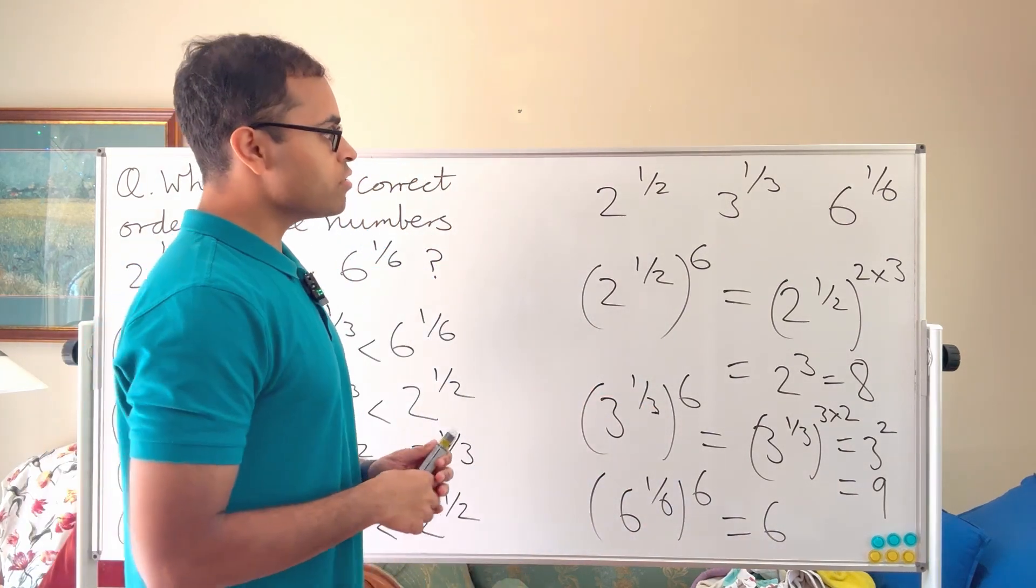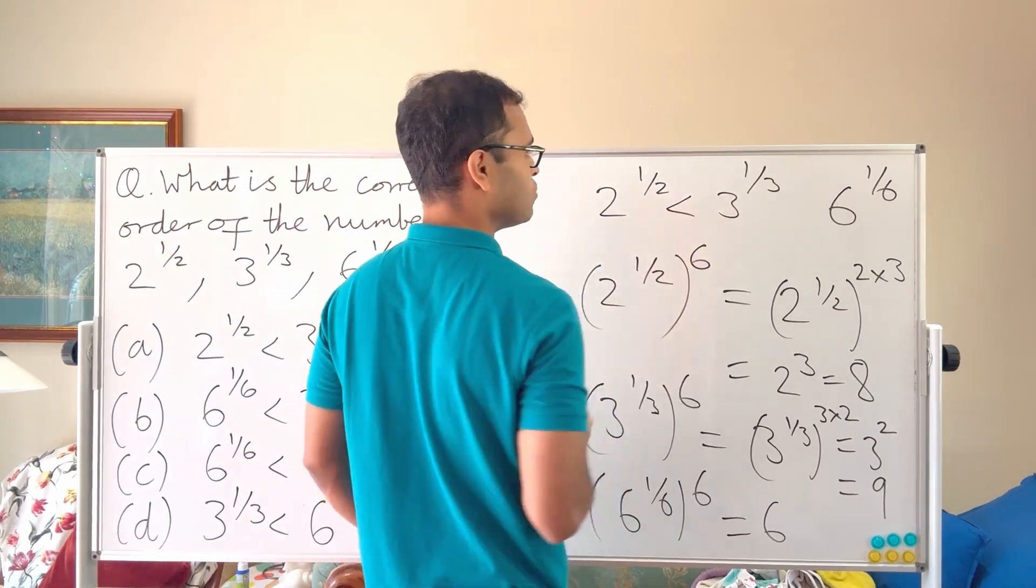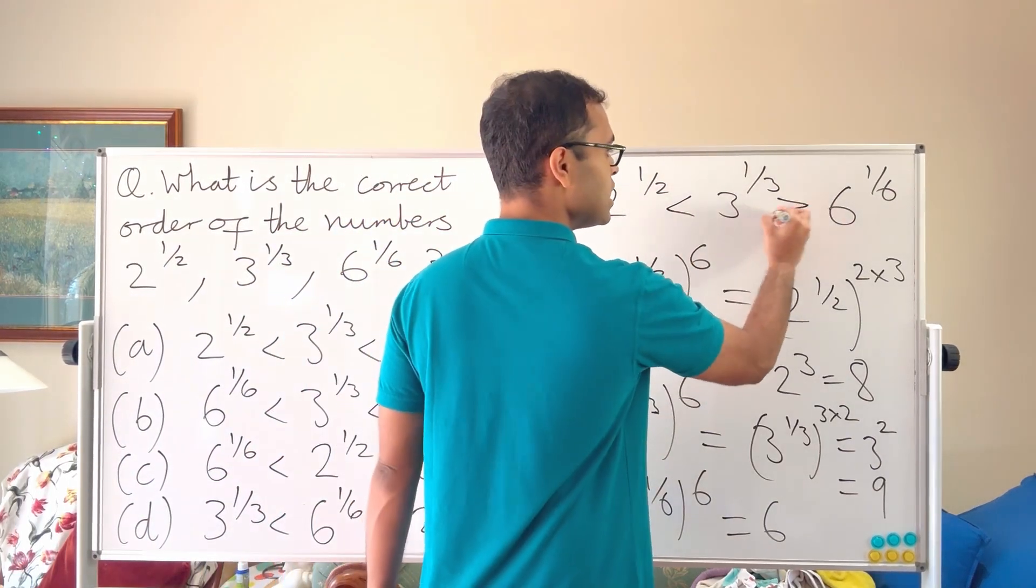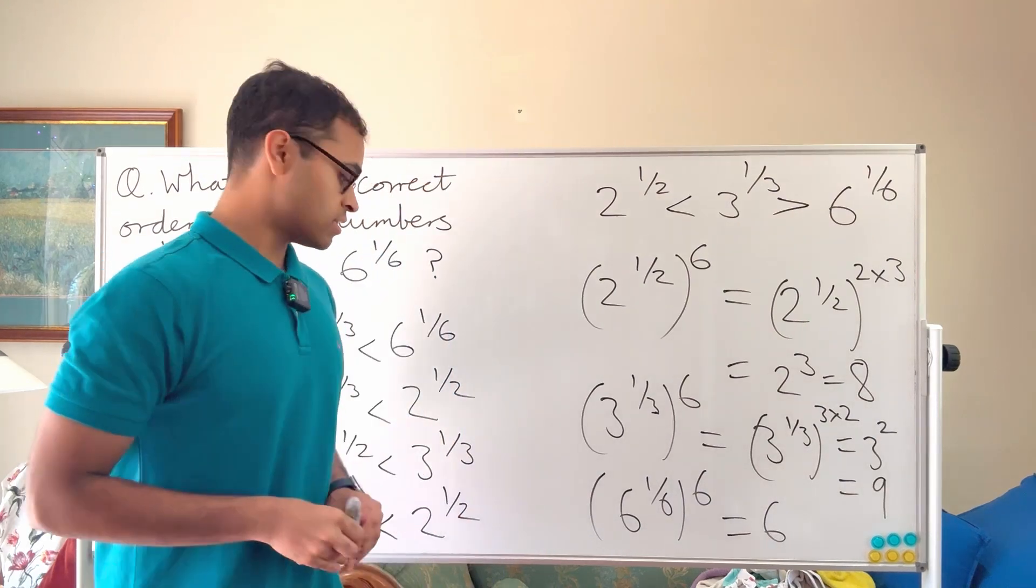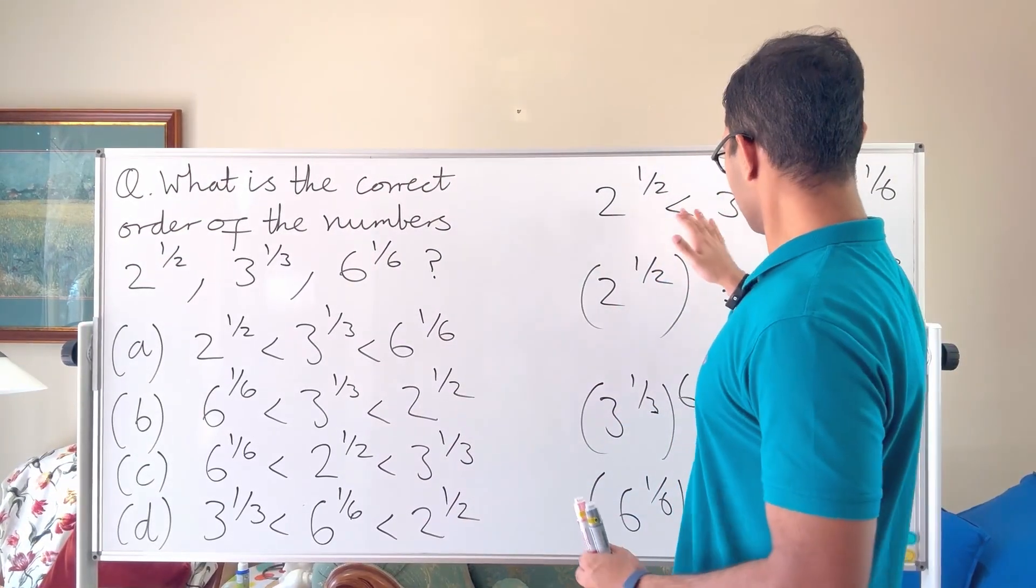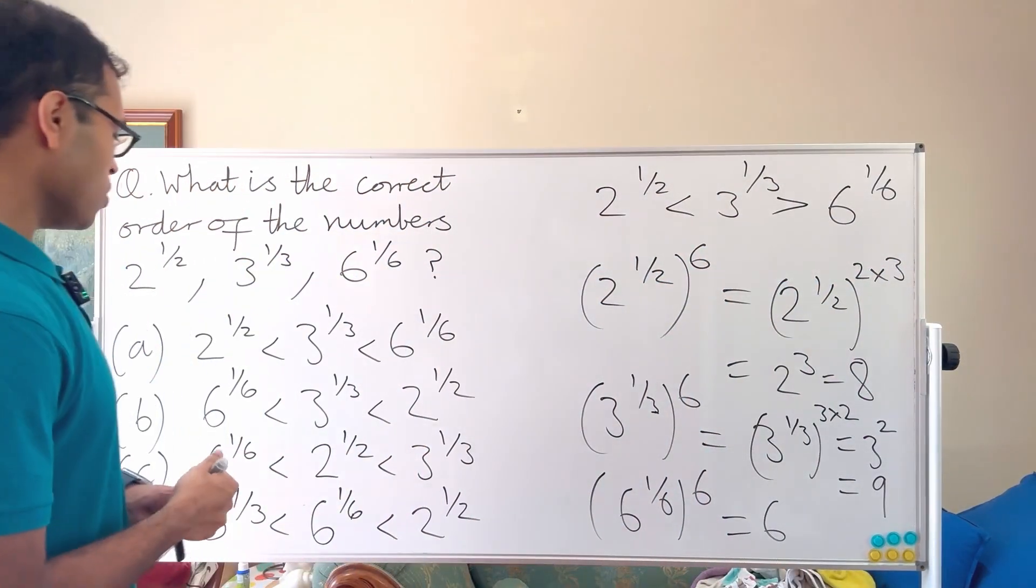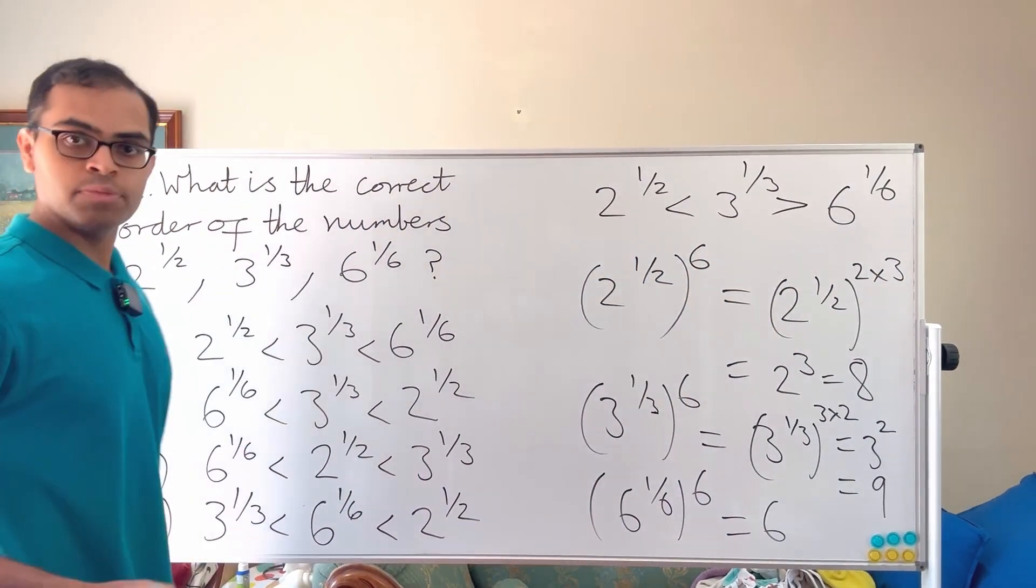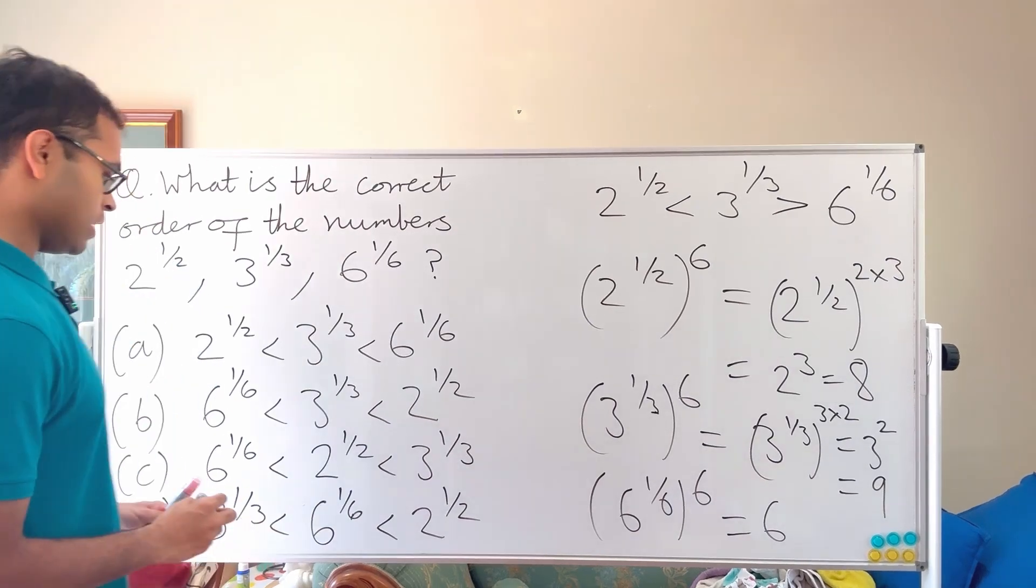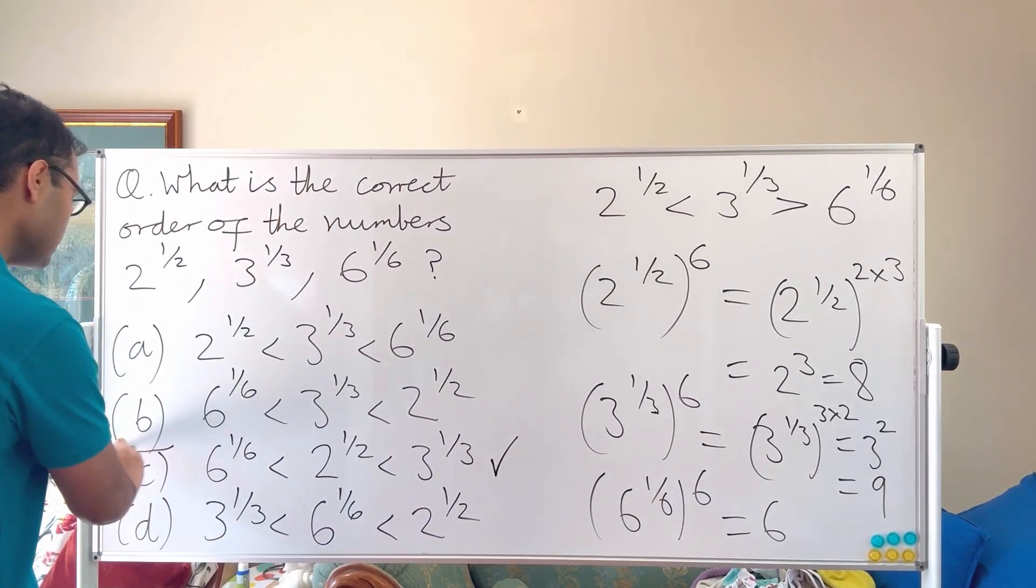The correct option is - we know that 2 power half is less than 3 power one over three and we also know that that's going to be greater than 6 power one over six which is the smallest number. So the correct option is just going to be this one - it's option C. That's our answer.